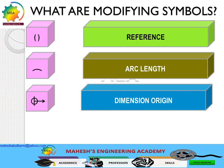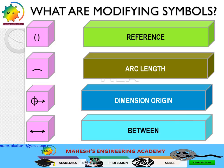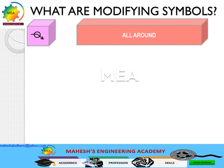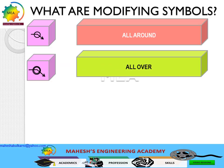The reference symbol is used to convey reference information which will not be inspected. Arc length specifies a dimension as an arc length. Origin of dimension specifies where the dimension originates. The between symbol conveys from where to where a profile of a surface is applied. All around is a two-dimensional symbol for profile of a surface or radius applying all around. All over is used to convey three-dimensional application of a particular feature or tolerance zone.